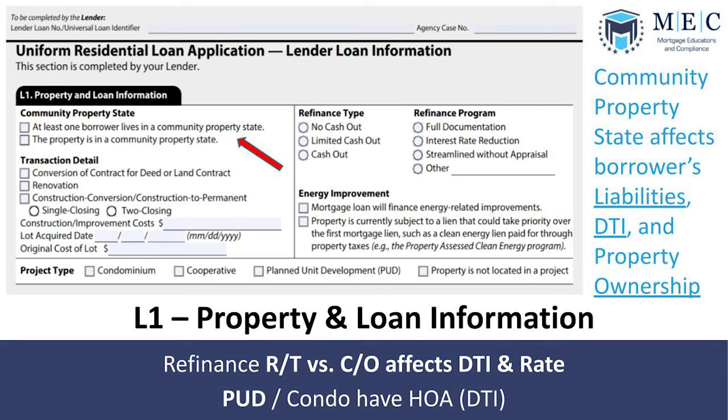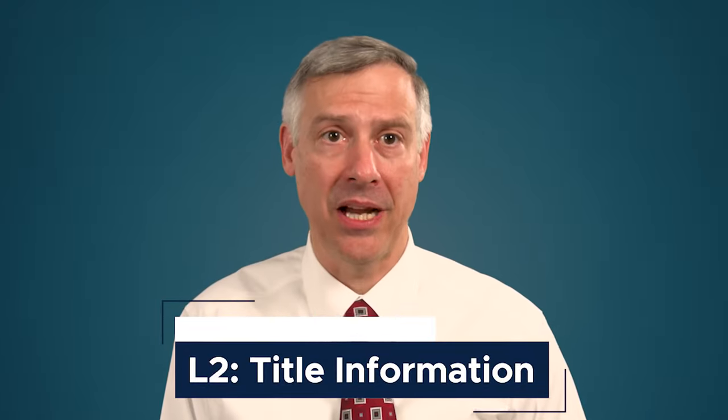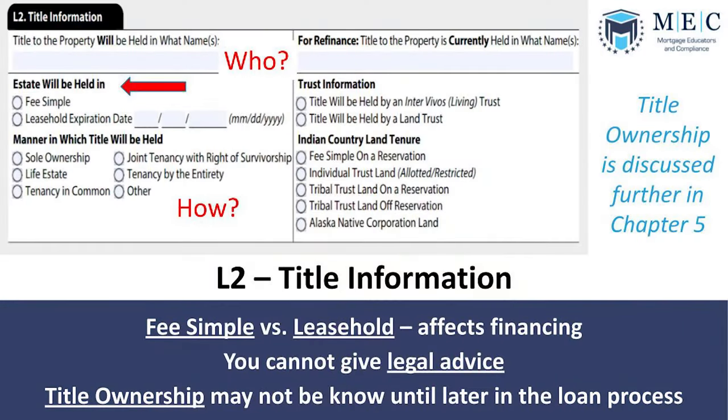In Section L1, you also capture whether it's a refinance and if it's cash-out or no cash-out. Section L2 is title information: who's going to be on the title and who's going to own the property. Important to note that someone could own the property and not necessarily be on the loan. We'll also determine how title will be taken, which we'll discuss in a later chapter.